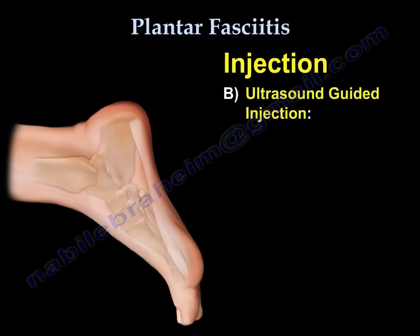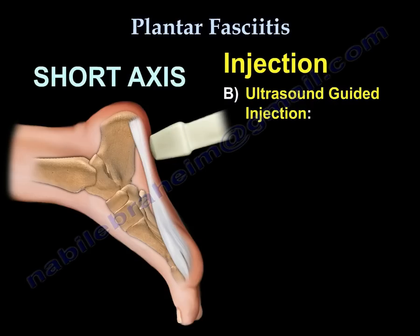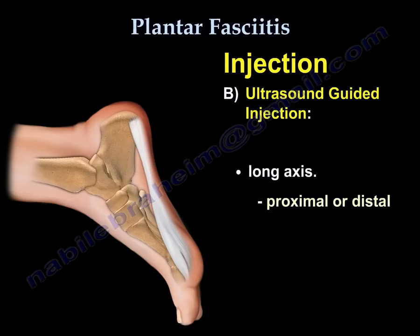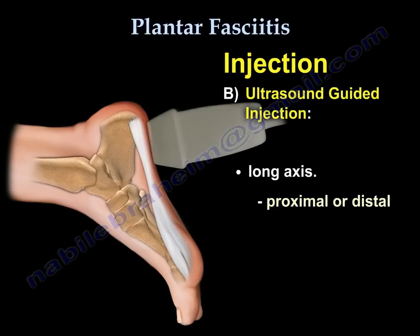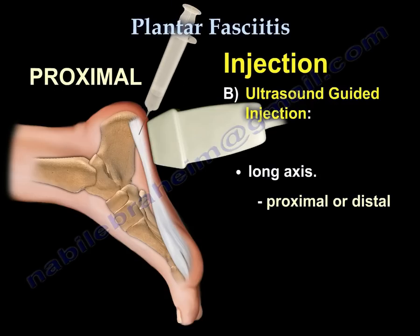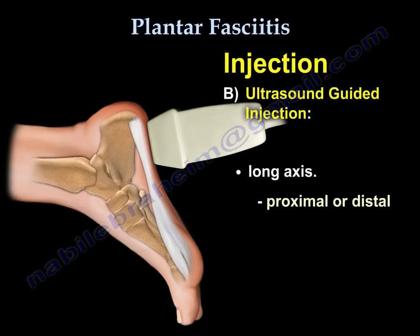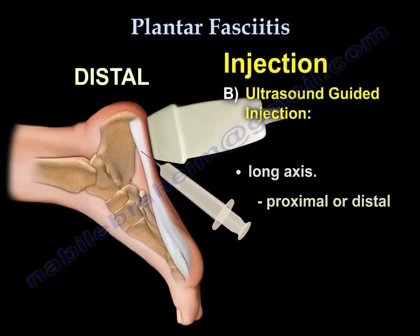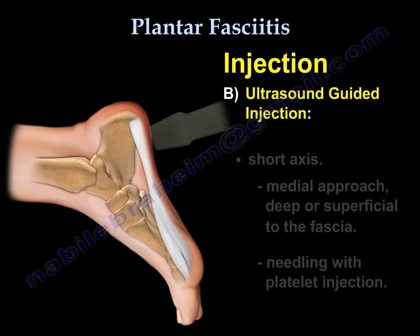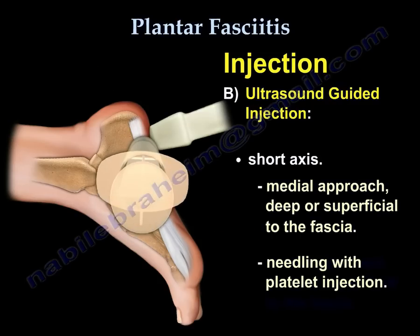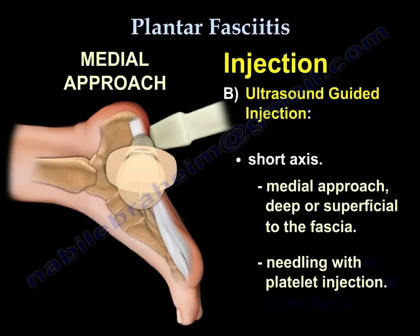When the injection is done by ultrasound guidance, it can be done on the long or short axis of the fascia. In the long axis technique, the fascia can be injected proximally or distally. In the short axis of the fascia, the injection is done by the medial approach. Inject deep or superficial to the fascia and use needling with platelet injection.